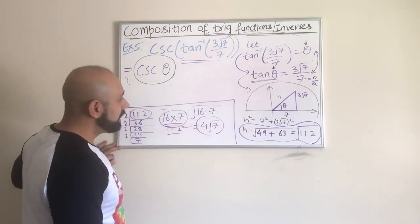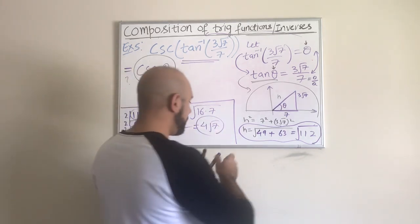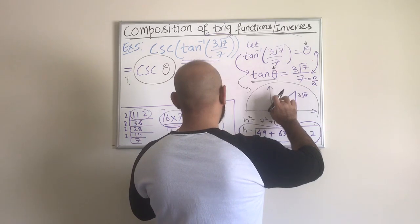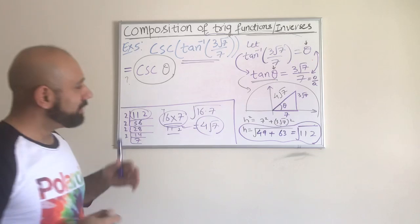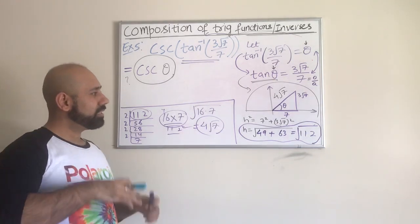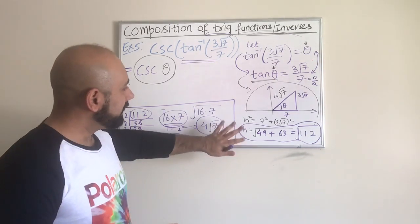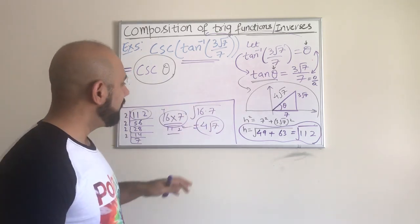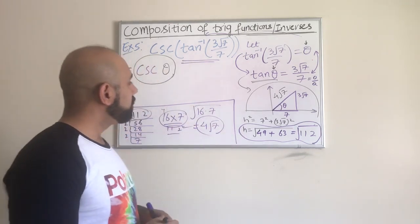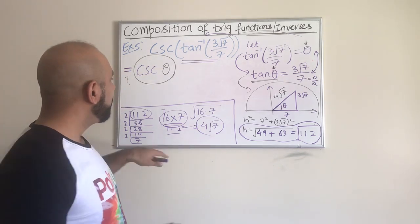That means my hypotenuse is 4√7. There are other easier ways of doing it as well, but I think this is the way that everybody knows. Everybody knows the Pythagorean theorem, so this is the way that we should try to find the hypotenuse.